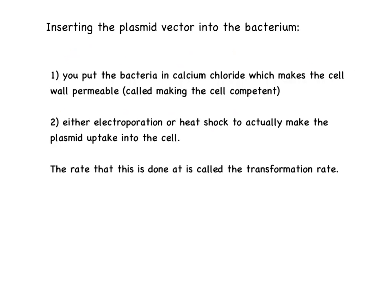To insert the plasmid vector into the bacterium, that is done in a process called transformation. First of all, the bacteria are put into calcium chloride, which makes the cell wall permeable — and that is called making the cell competent. Then, either through electroporation or heat shock, the plasmids are taken up into the cell. The rate at which that's done is called the transformation rate.